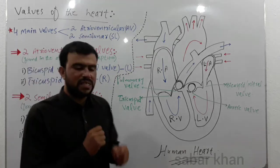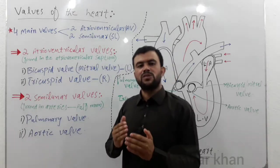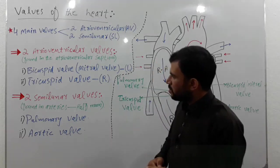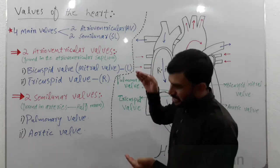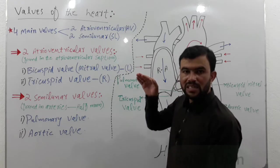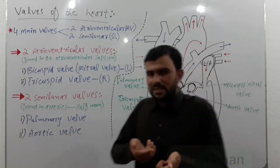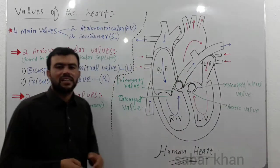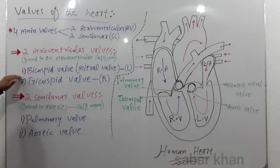Atrioventricular walls are called atrioventricular walls because they are present in the atrioventricular septum. The atrioventricular septum is the septum that separates the atria from the ventricles, and the walls present in that septum are called atrioventricular walls. The first atrioventricular wall is...